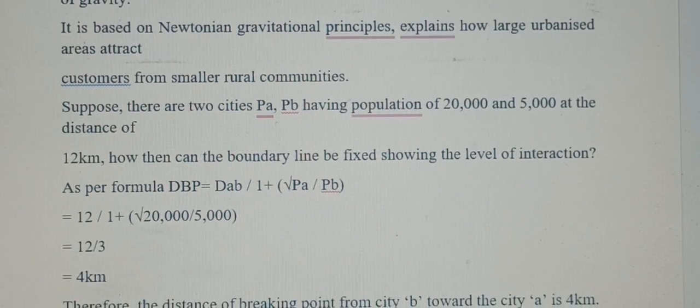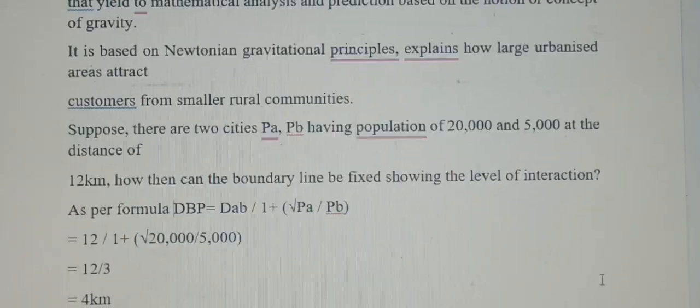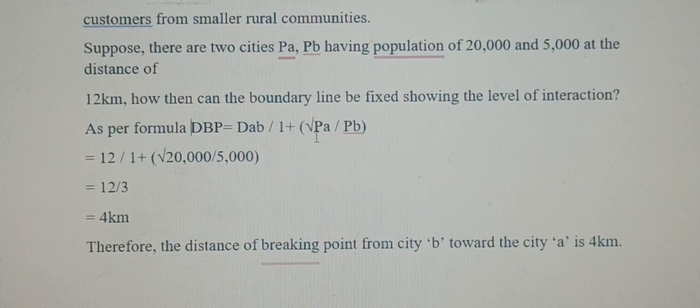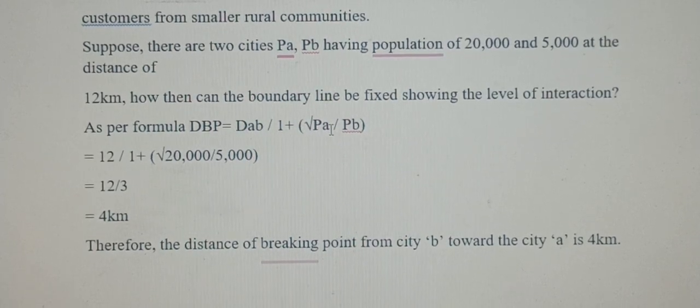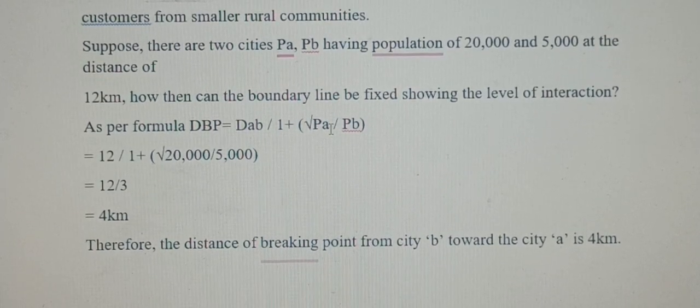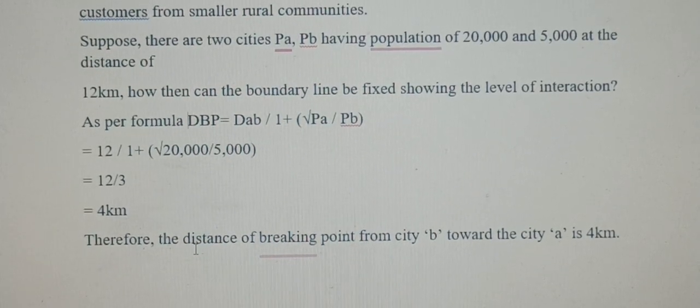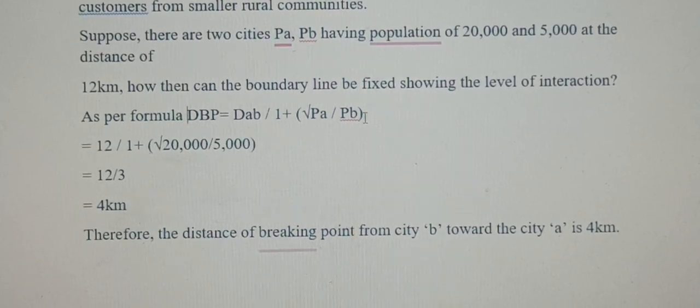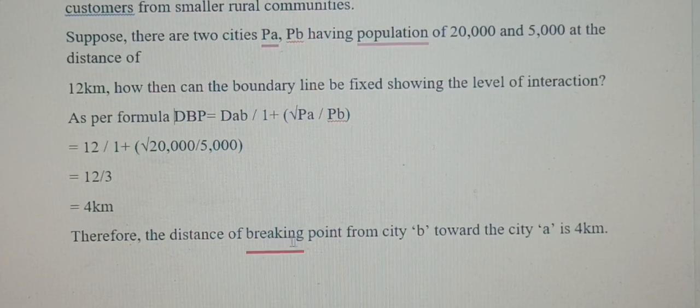Therefore, the distance of the breaking point from city 'b' towards city 'a' is 4km. This is the point where we have to understand something: since we have taken the larger town population in the numerator, the breaking point will be from city B or from the smaller town.